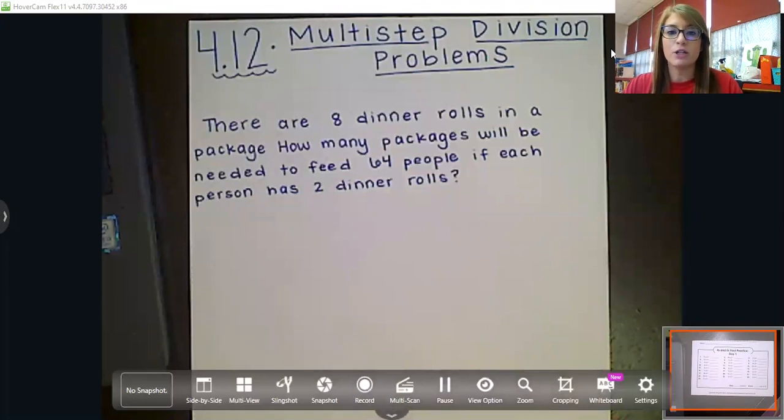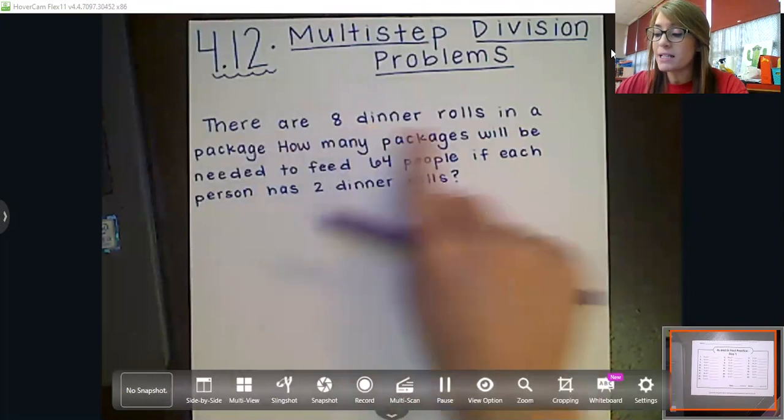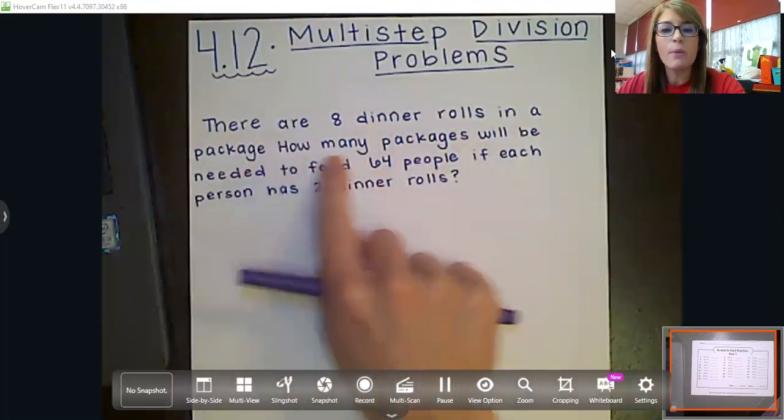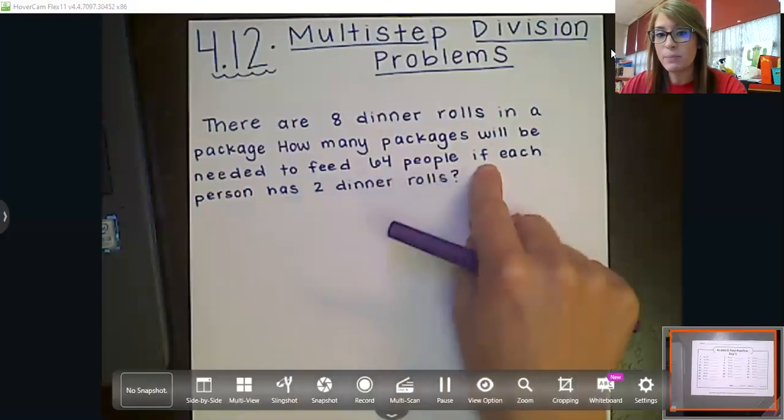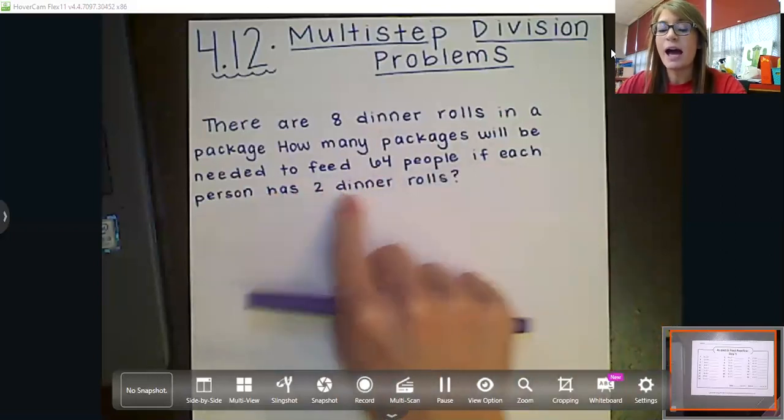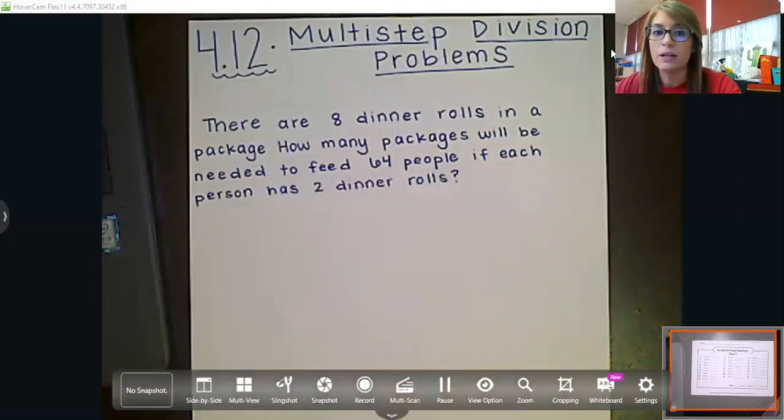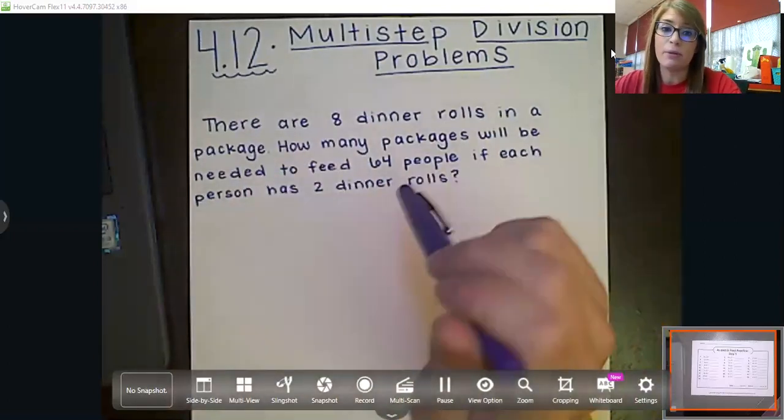So multi-step division problems. Let's look at what we've got. There are eight dinner rolls in a package. How many packages will be needed to feed 64 people if each person has two dinner rolls? Okay, so first things first, we need to go through and find the important information in this problem.